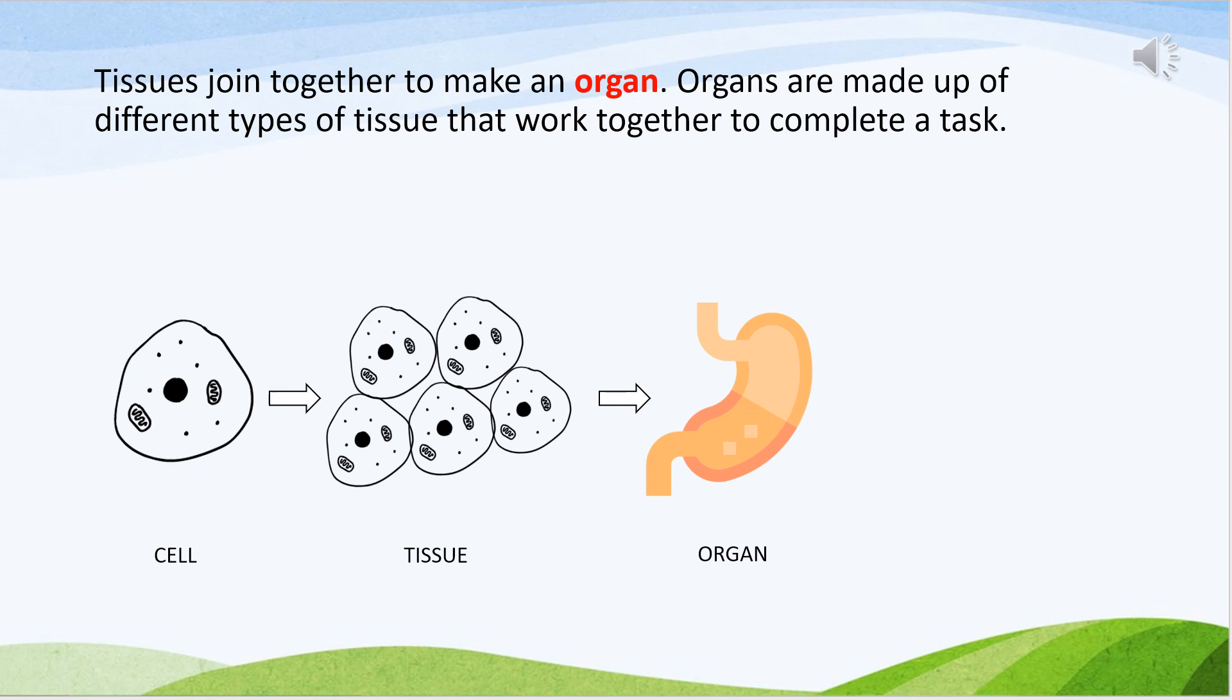Then tissues join together to make an organ. Thus organs such as stomach, liver and heart are made up of tissues. These tissues work together to complete a task.